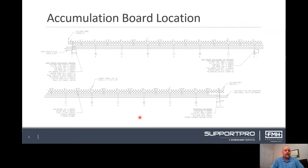The accumulation board is located under the rollers in a small electrical enclosure in each accumulating zone.